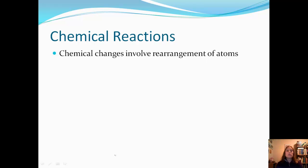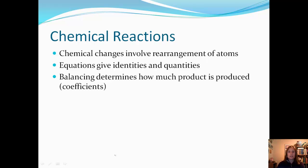Let's talk about some chemical reactions. A chemical reaction is basically a change that involves the rearrangement of atoms. We can't create any new atoms, and that's why we balance equations. We can't incorporate different elements - that would violate the law of conservation of mass, and that's why we write correct compounds. Equations give the identities, the types of atoms and the quantities or the amount. Balancing determines how much product is produced, so by looking at the coefficients, that tells us how much product we're going to make.